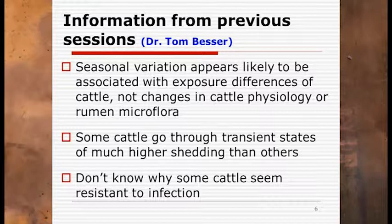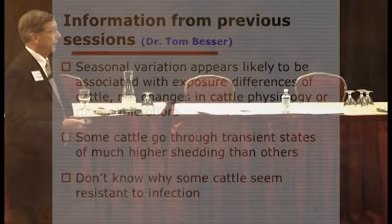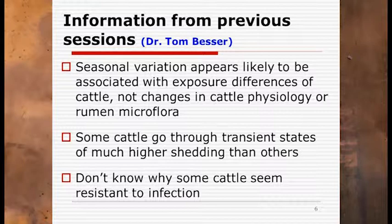We talked about seasonal variation. Tom presented information suggesting it may have more to do with exposure of cattle at a particular time rather than changes in cattle physiology or rumen microflora. Quite a few speakers talked about the super-shedder state and how it seems to be transient within individuals. As a veterinarian, I note that we've talked about super-shedders with bovine virus diarrhea for decades — those are individual animals we can identify and pull from the herd. This is not that, yet it's the same terminology, which is very confusing. We're talking about an entirely different scenario than the paradigm I grew up with.